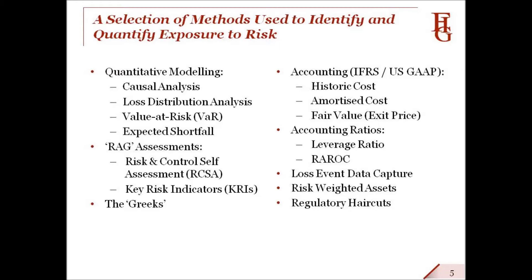We have a particular issue with RAG assessments in the left column. Here we identify risk and assess the likely impact by using a system of three colors — red, amber, and green. Unfortunately, we can't consolidate and aggregate colors, and yet this is the technique that is universally used by financial firms to manage their operational risks. So, is BCBS 239 dead in the water? It possibly is, unless we can think of something new.